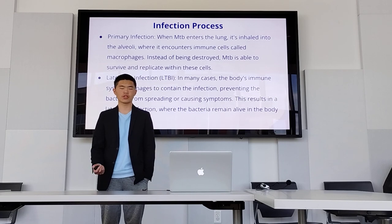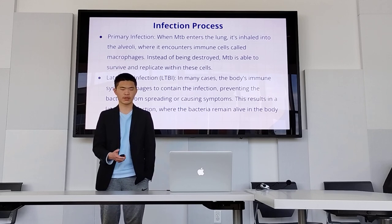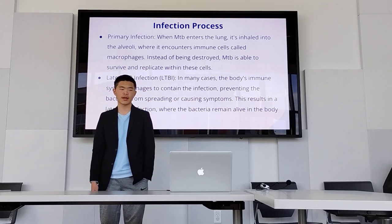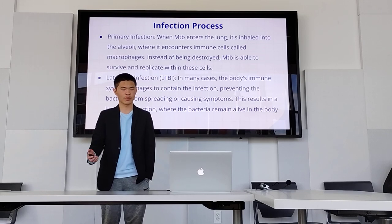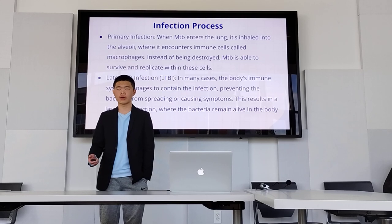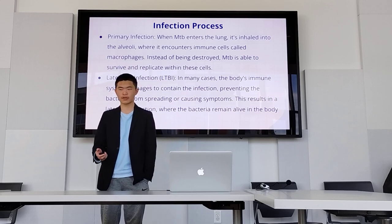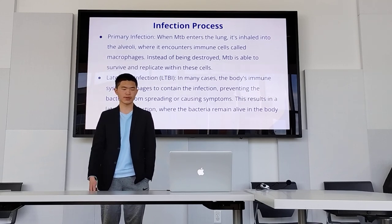In primary infection, TB enters the lung and the alveoli. The macrophage, as part of the innate response, will engulf and ingest the TB, but the bacteria can actually survive inside these cells. It can either stay in the cell while the macrophage survives and continues to proliferate, or it could cause the macrophage to undergo programmed cell death or necrosis, in which case it can spread and infect other cells.